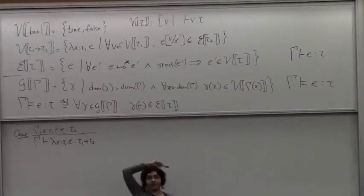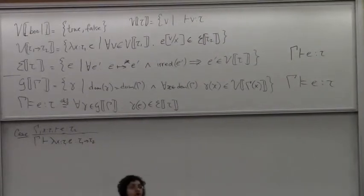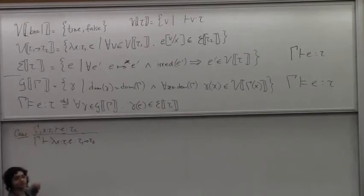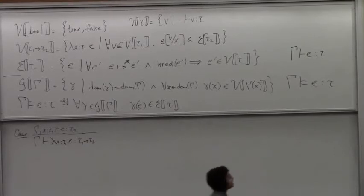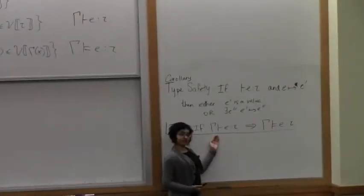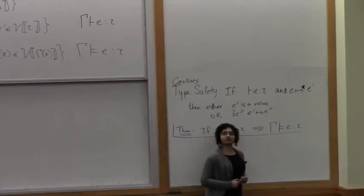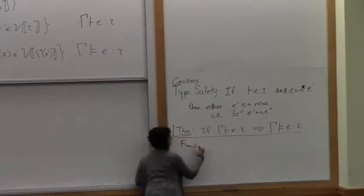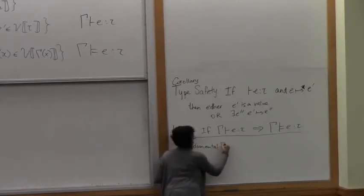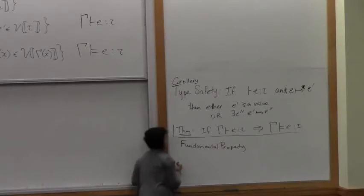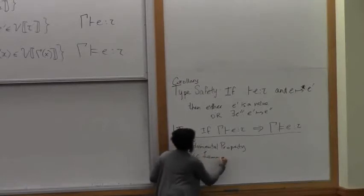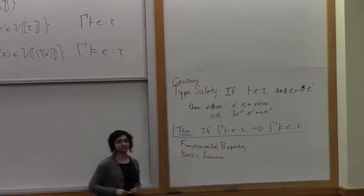What we've done is build a logical relation. We first explained when closed values and closed expressions belonged to the value and expression interpretations, and then we explained when open terms were in the logical relation. So this theorem is saying that if something is well-typed, then it belongs to the logical relation. This theorem is known as the fundamental property — it's also called the basic lemma. In papers you read, you will see it called either one or the other.